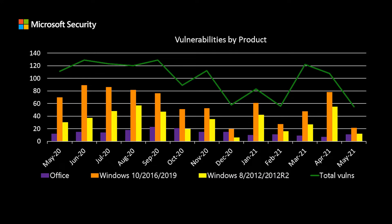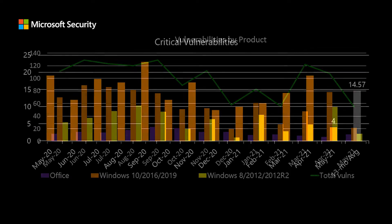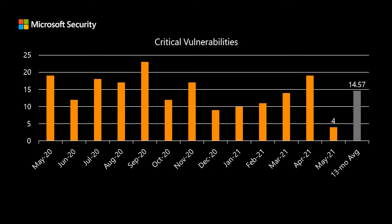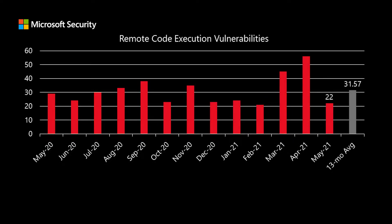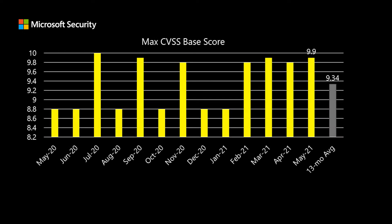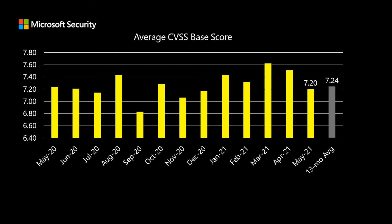This month we have 55 total vulnerabilities being addressed, and that's down from our 13-month running average of 101. When we look at our critical vulnerabilities, we only see 4 being addressed this month — again lower than our average of 14. Remote code execution vulnerabilities are also lower this month with only 22, and we usually see about 31. The max CVSS score this month is 9.9 out of 10. The average CVSS score across all 55 vulnerabilities is 7.2, which is just around our average of 7.24.